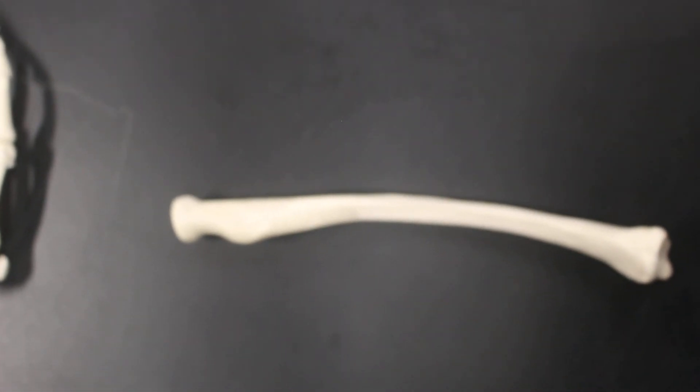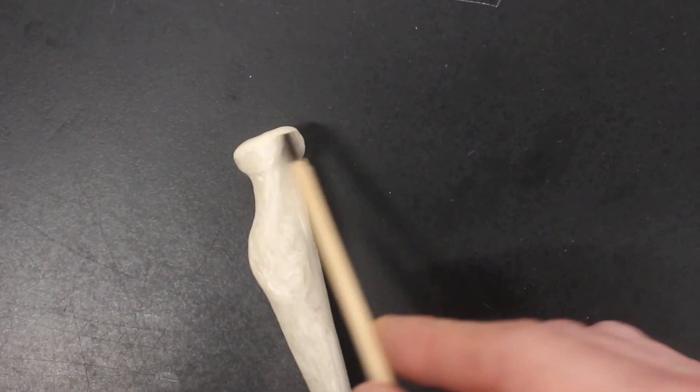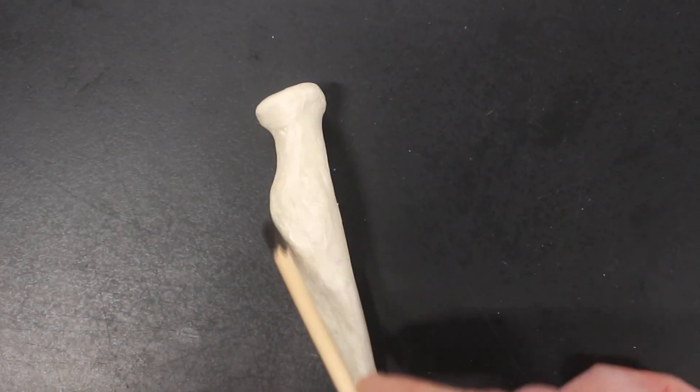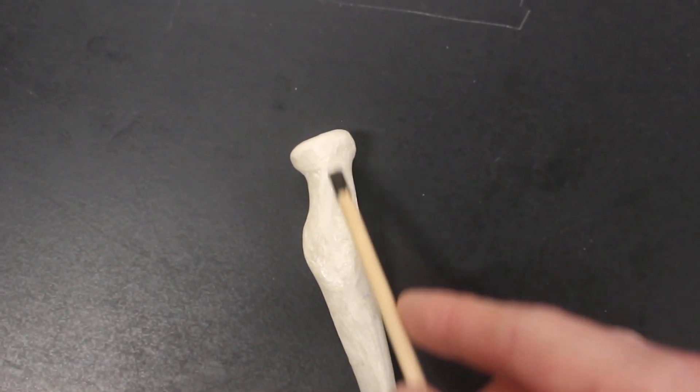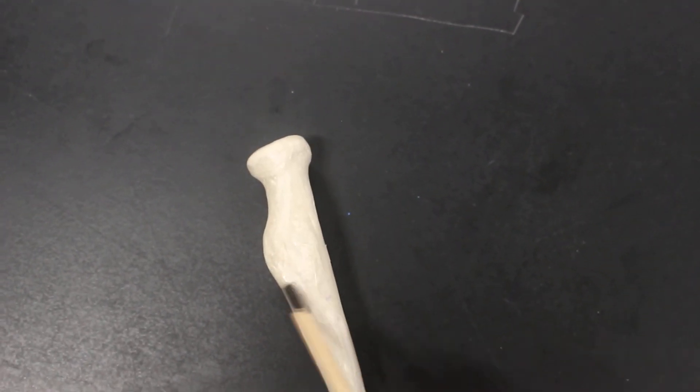Here is the radius. Love the radius. Okay, if the radius is proximal end, we have the head. We have the radial tuberosity. We have the neck underneath the head. Radial tuberosity.